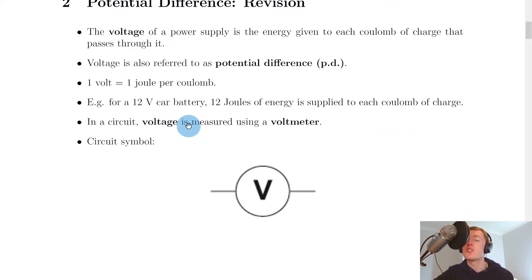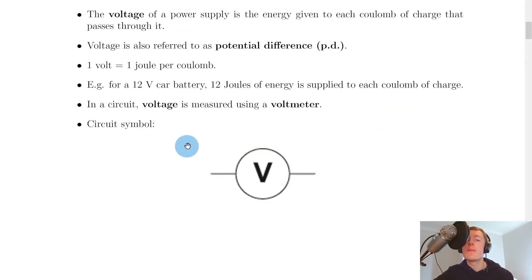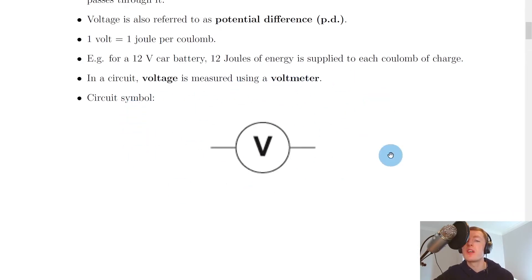In a circuit, you should also remember the device used to measure voltage or potential difference across a component, and this is called a voltmeter. Voltage is measured using a voltmeter, and this is the circuit symbol for it: a big circle with a capital V inside it.